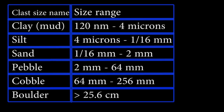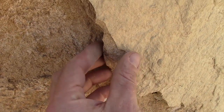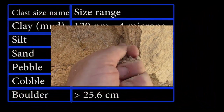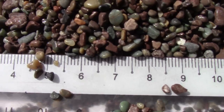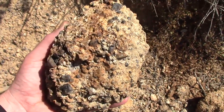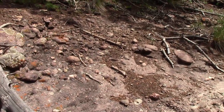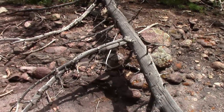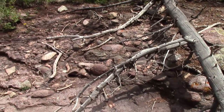Next size up is silt, ranging from four up to 62.5 micrometers, or up to one sixteenth of a millimeter, and that's where we transition into fine sand, starting at about one sixteenth of a millimeter and ranging up to the largest coarse sand at two millimeters. Then we get pebbles up to 64 millimeters, cobbles up to 256 millimeters, and boulders over 256 millimeters — or 25.6 centimeters, a little over a quarter of a meter.